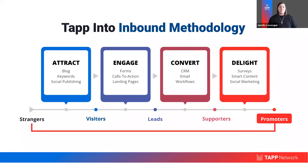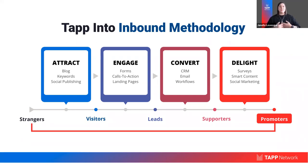Inbound marketing is split into four key stages that seek to drive a five-stage conversion pattern. First, you attract strangers to your organization through tactics like blogging, keyword targeting, and social media — turning strangers into visitors on your website. Once you have visitors on your site, you engage those people into becoming leads through forms, calls to action, and landing pages. The idea is to capture that potential supporter so you can continue to nurture them through your systems and pipelines.